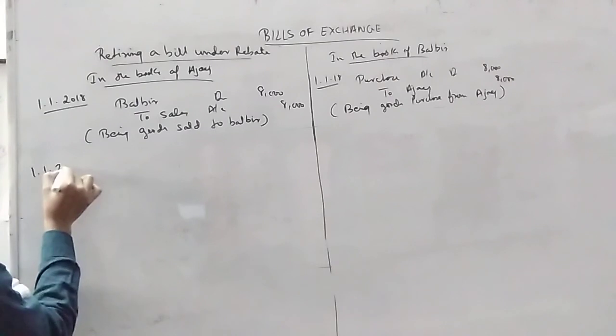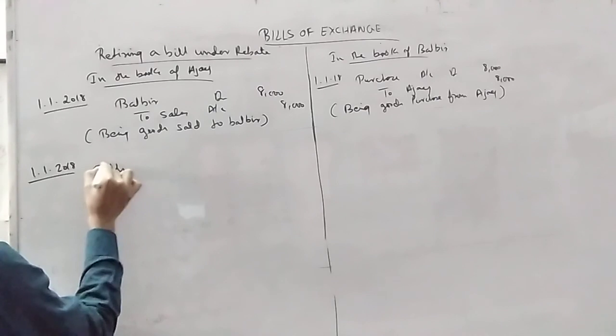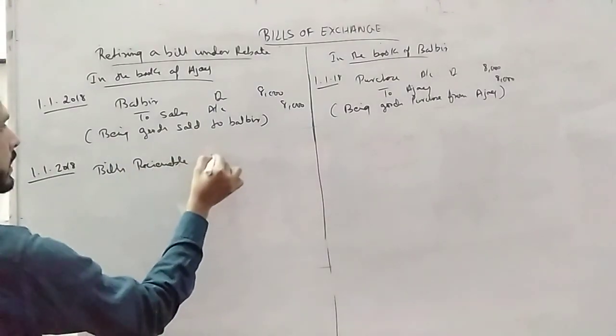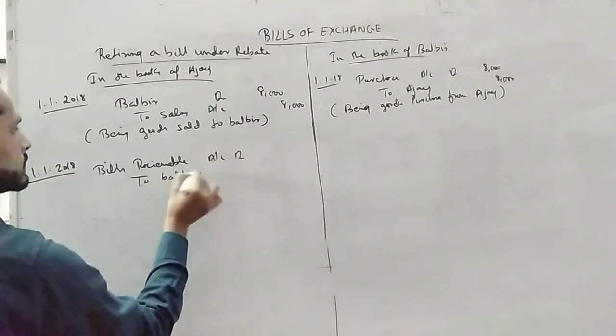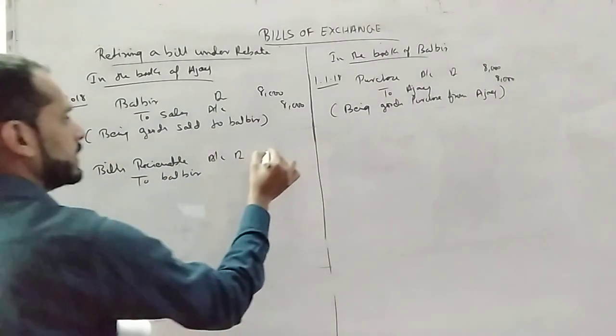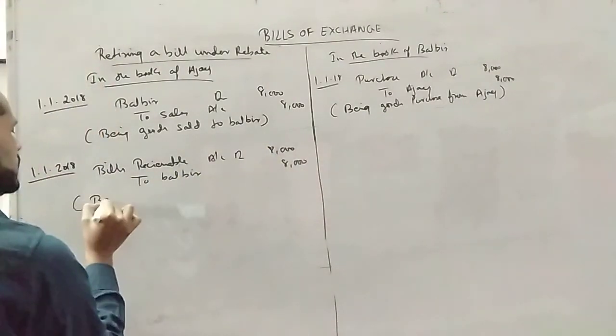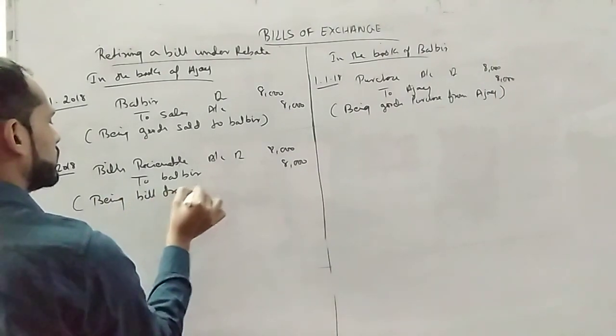Same date, bill accepted, bill drawn. Bills receivable account debited. One bill 8,000, 8,000, 8,000.